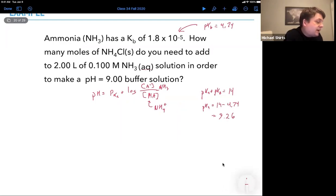So we have a pKa and we can plug into Henderson-Hasselbalch. So pH is going to be 9.26. And actually we know the pH.